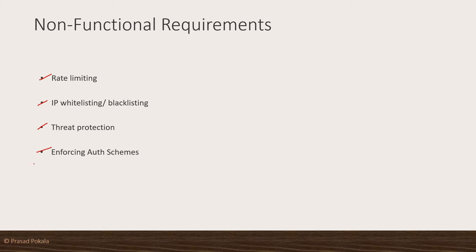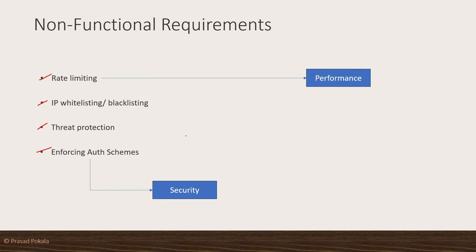The most important NFRs which many organizations are concerned with include majorly the security aspect and the performance aspect. And obviously, the proactive system stability related NFRs as well. They always try to meet these things first, along with others like rate limiting, IP whitelisting, etc.